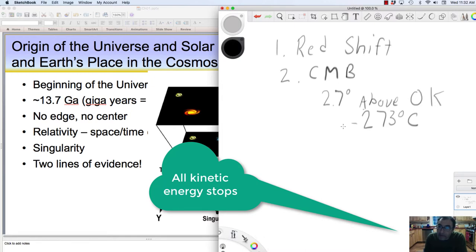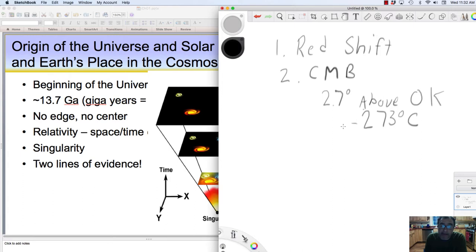But once you get to absolute zero, which is zero degrees kelvin, all that kinetic energy stops. Everywhere we look in the universe, we still see that thermal energy, and that thermal energy is this microwave background radiation, the cosmic microwave background radiation.